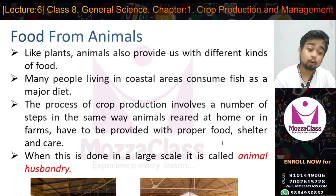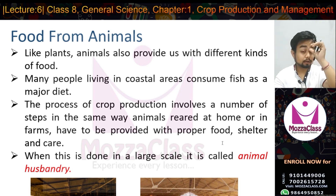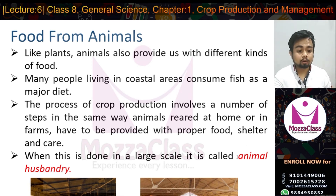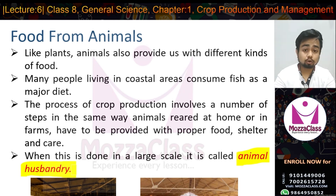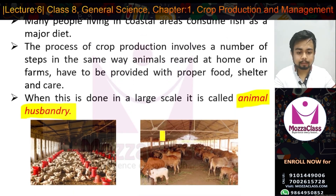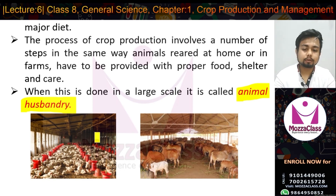Animals have to be provided with proper food, shelter, and care. When this is done on a large scale, it is called animal husbandry. For example, poultry farming for eggs or meat is a large-scale animal rearing process.